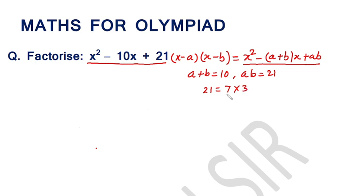When we add these two factors, 7 plus 3 is equal to 10.